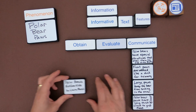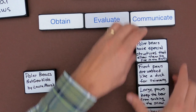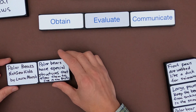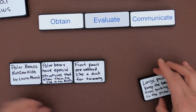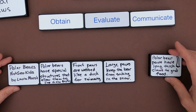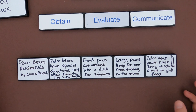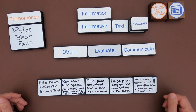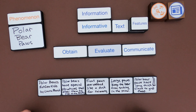Now I'm ready to communicate that information. I could communicate it through text — write out a summary — or I could just do it orally. If I were to do it orally, I would say: According to 'Polar Bears' by Laura Marsh at Nat Geo, polar bears have special structures that allow them to live in the Arctic. For example, their front paws are webbed like a duck for swimming; they have large paws that keep the bear from sinking in the snow; and polar bears have long thick claws to grab food. That's me taking in information, evaluating it, and now describing or communicating it. I'll give you a couple of texts and have you do the same, then we'll see how our ideas compare.